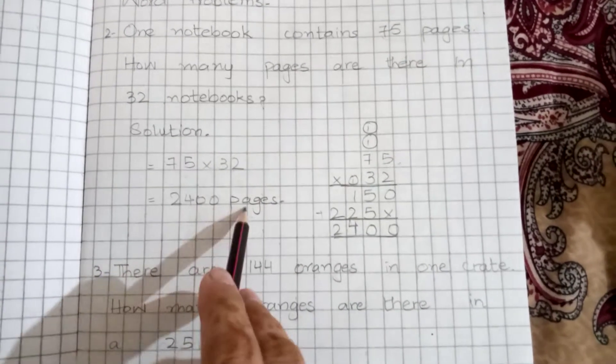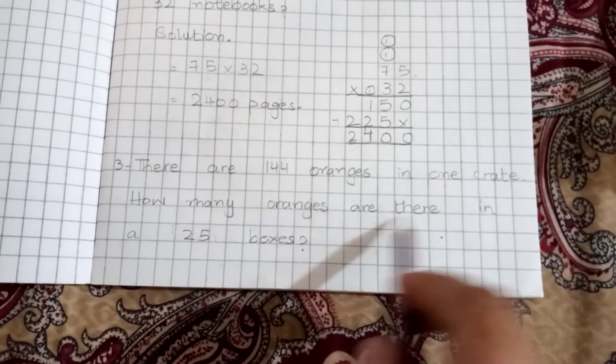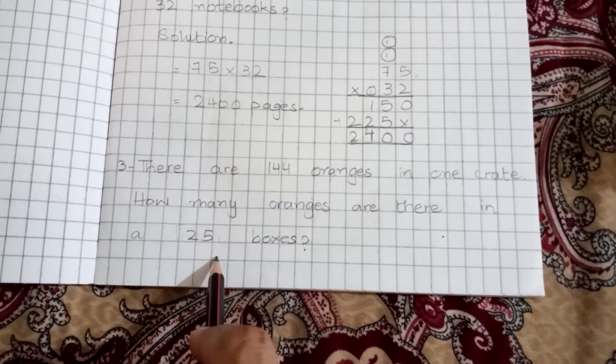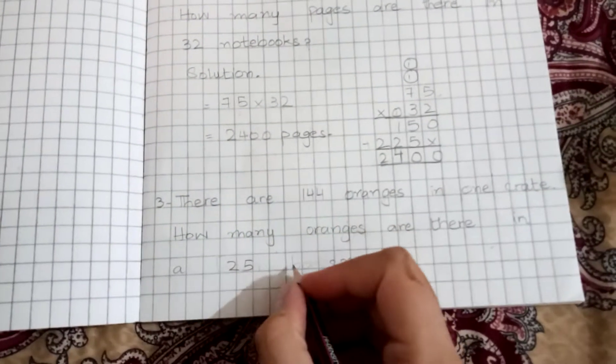Look, 2400 pages there are. Problem 2: There are 144 oranges in one crate. How many oranges are there in 25 crates? So 25 crates, how many oranges?